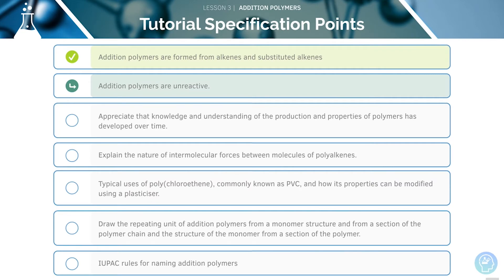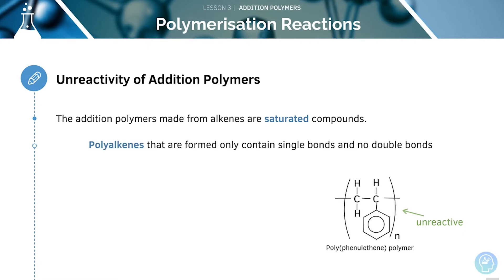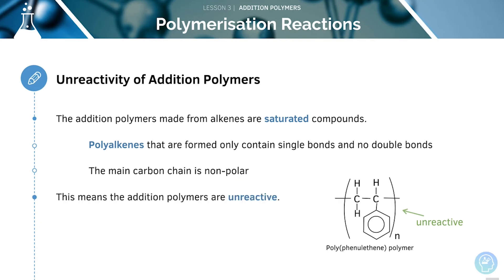We'll move on to see how unreactive addition polymers are. The polyalkenes that form will only contain single bonds, which means that they are saturated compounds. The main carbon chain is non-polar, which means that the addition polymers are extremely unreactive.